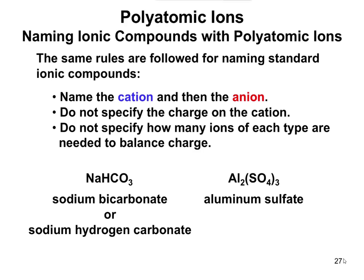For naming ionic compounds with polyatomic ions, you name the cation and then the anion — you don't specify the charge or how many of each there are. It's the same naming rules as any other ionic compound. For example, NaHCO3 is sodium bicarbonate. Al2(SO4)3: Al is aluminum, SO4 is sulfate, so it's aluminum sulfate.